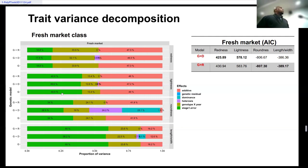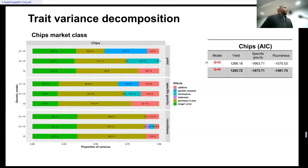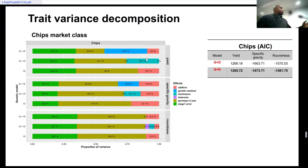Depending on whether you're trying to develop a cultivar or improve your population for selection, you need to carefully select the appropriate model for your breeding program. In the chips market class, there is more going on with non-additivity for yield, which we already know is affected by non-additive effects. There's more dominance variance estimated for yield, but when using the residual approach, we see a bit more additivity in the prediction, which also has implications for the breeding program depending on the objective.